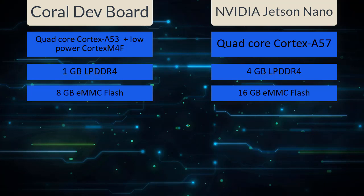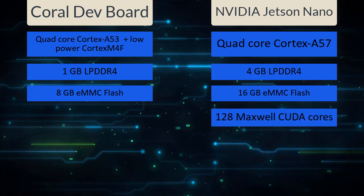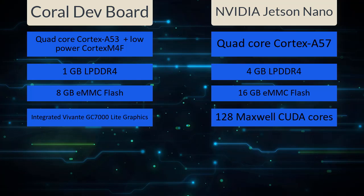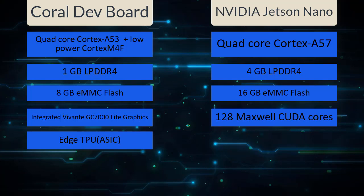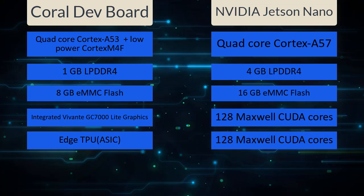For the GPU, Jetson Nano has an NVIDIA Maxwell architecture GPU with 128 CUDA cores, while Google Coral Dev Board has integrated Vivante mobile graphics. Most people won't use these as desktops — they want them for machine learning inference. The ML accelerator on the Google Dev Board is Google's proprietary Edge TPU, while the Jetson Nano uses its 128 CUDA core GPU to accelerate deep learning algorithms.